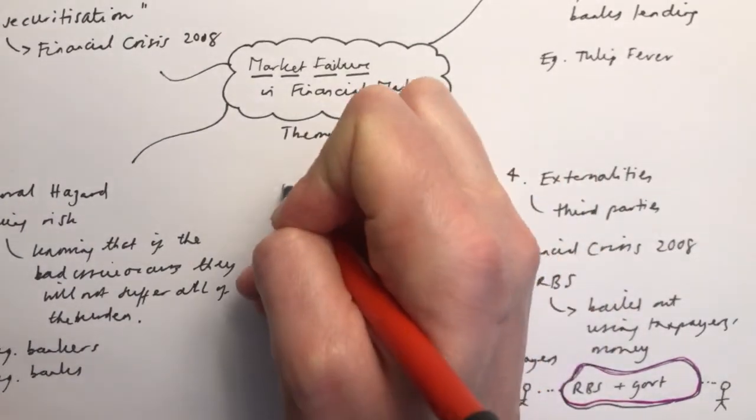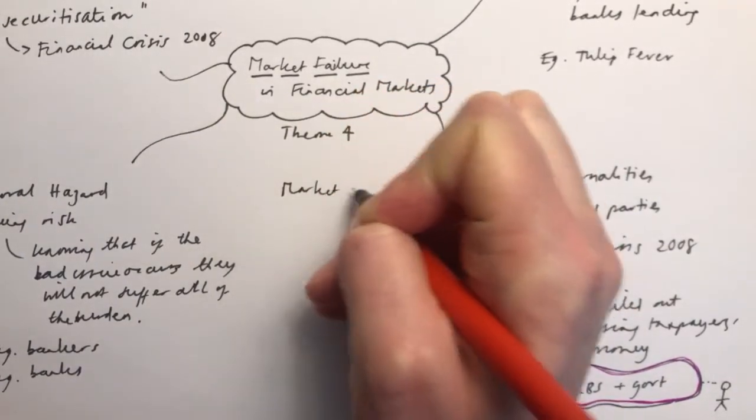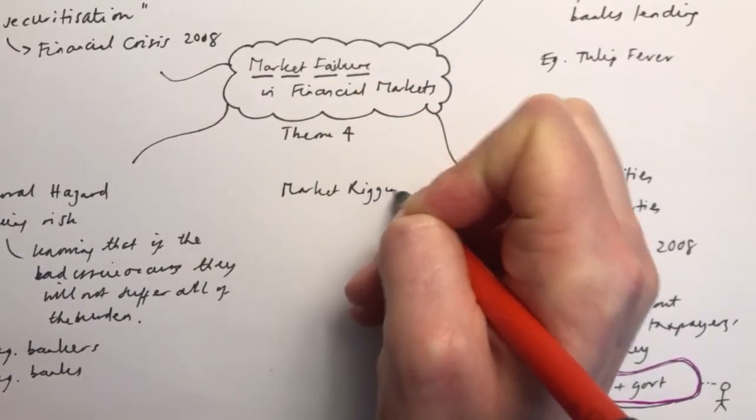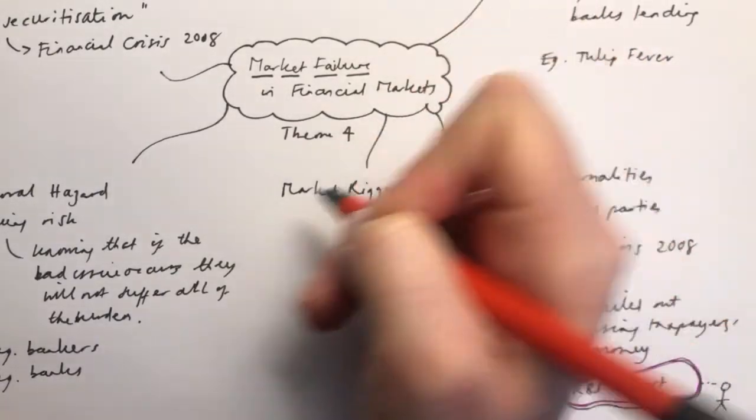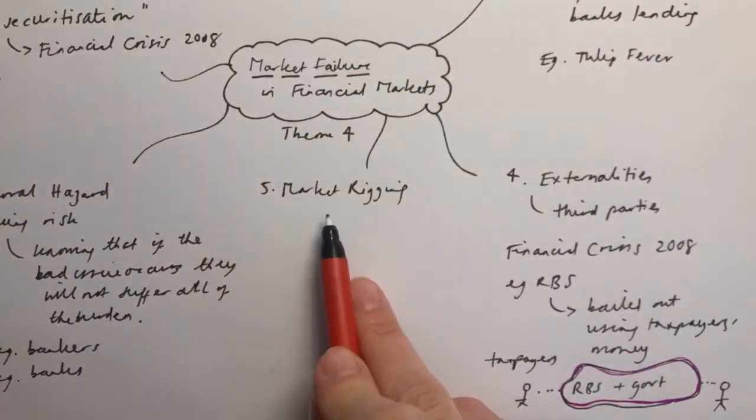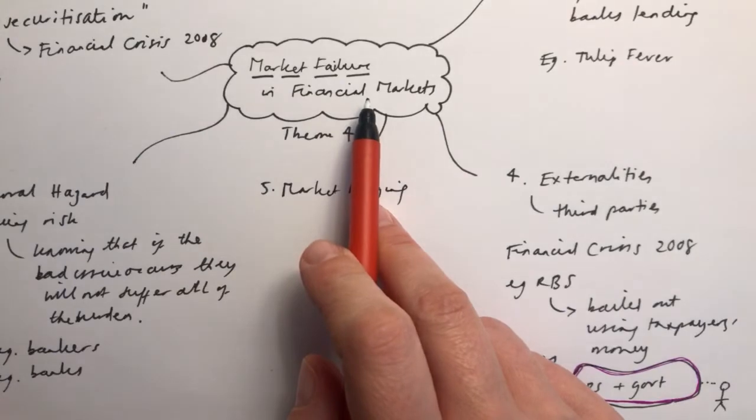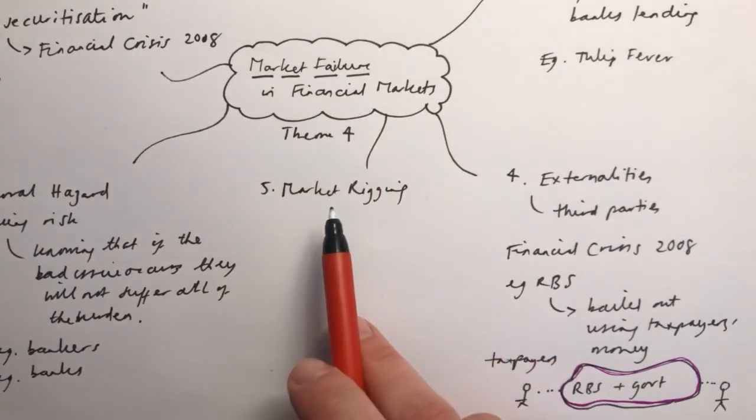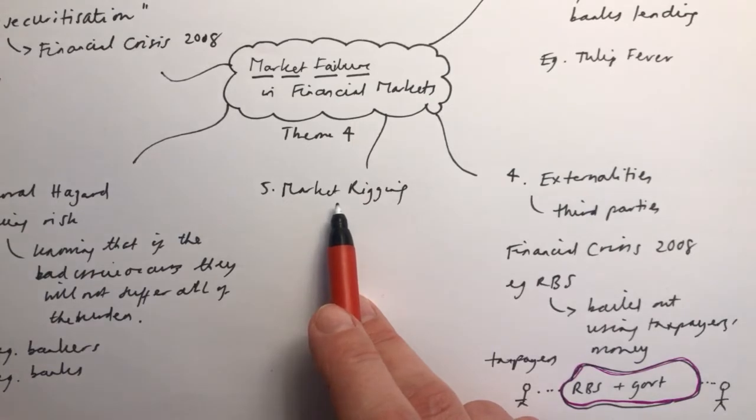There's one last one though that I want to talk about, which is market rigging. This is where activity within the financial market, often within banks for example, results in the market being fixed or set in a certain way which actually harms other people, other participants in the market. It's at their expense.